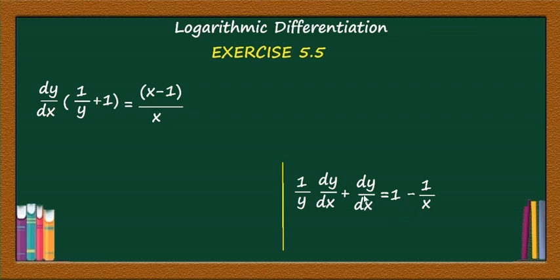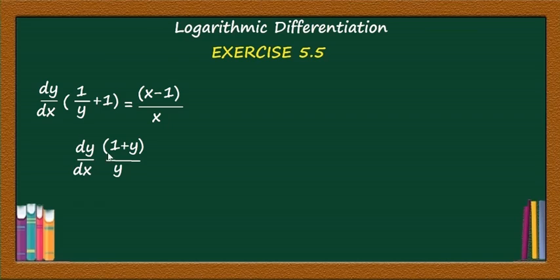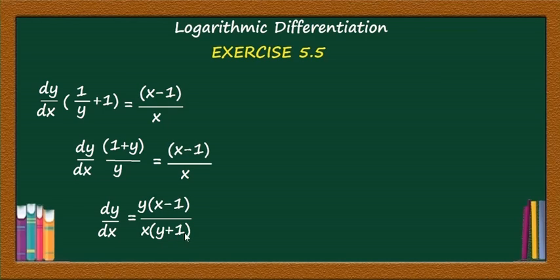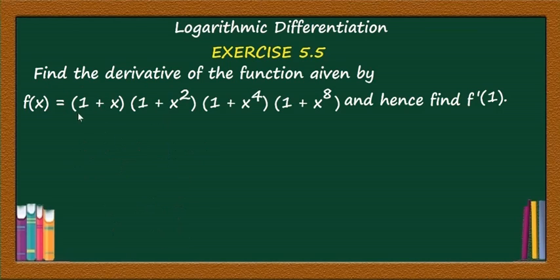With LCM, dy/dx·(1 + y)/y = (x−1)/x. Cross multiplying: dy/dx = y(x−1) / x(y+1).